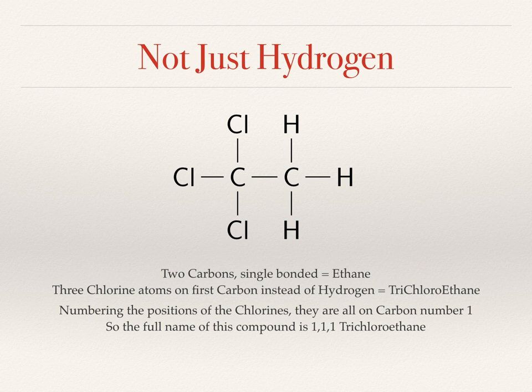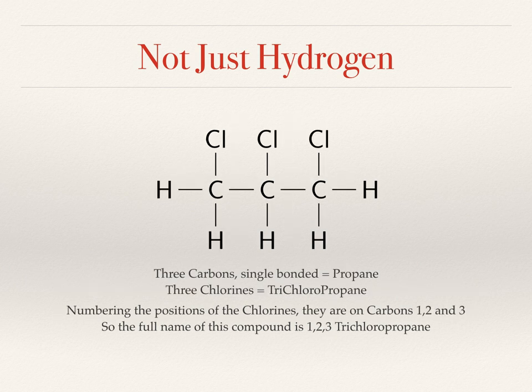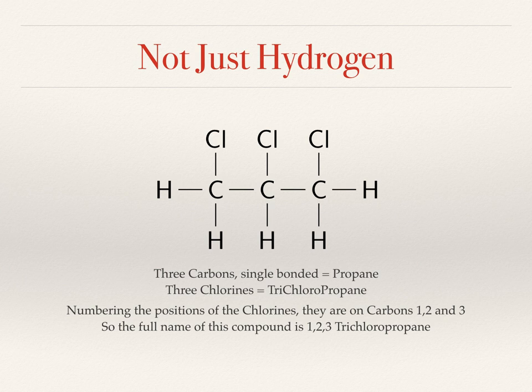This molecule on this slide is a fairly contrived example, but one that could exist. Each of the carbons is bonded to a chlorine, so no one carbon is more interesting than the other, and the molecule is identical left to right. It's three carbons, single bonded — propane — and we have three chlorines, so it would be trichloropropane. More specifically, we add in the positions of the chlorine atoms and get 1,2,3-trichloropropane, the numbers being the positions where the chlorines are attached. This is actually a really nasty carcinogen and absolutely not something you will work with in conservation.